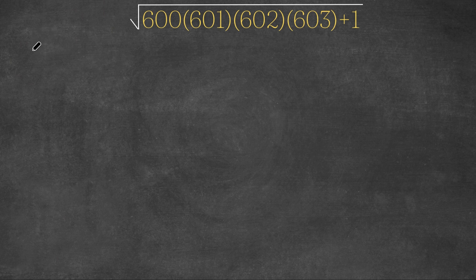So what I'm going to do is set 600 equal to x. So 600 equals x. And this means that 601 is equal to x plus 1, 602 is equal to x plus 2, and 603 is equal to x plus 3.